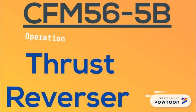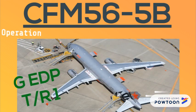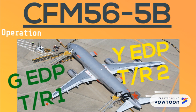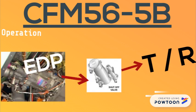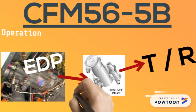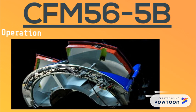Thrust reverser operation: the thrust reverser system is hydraulically supplied by the corresponding hydraulic pump on the engine itself. The thrust reverser is isolated from the hydraulic supply by means of a shut-off valve. This is the third line of defense. Keep in mind that each door is operated by a hydraulic actuator.